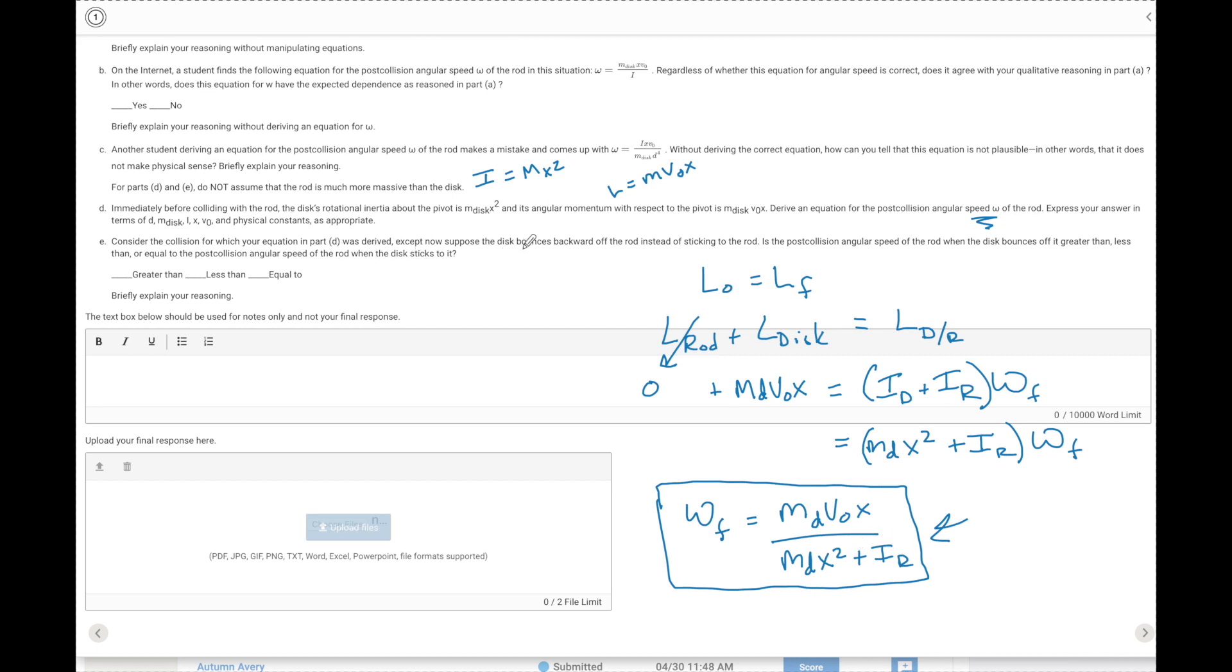Part E says, all right, now instead of it sticking together, now it bounces back off the rod instead of sticking to it. The post-collision angular speed of the rod when the disc bounces off is greater or less than or equal to the post-collision speed when it sticks to it. It's going to be greater. And we can show that mathematically, or we can explain it in words. We know that there's no outside forces or torques acting. So we know that momentum is going to be conserved. So we just found WF of this system. So let's see if we can go and now it bounces back. So we'd have the exact same L initial, which would be M disk VX equals, now I would have the mass of the disc V final X, which is going to be the angular momentum of the disc after.